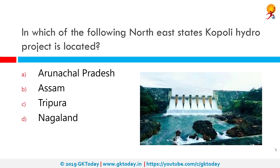In which of the following Northeast states is the Coppoli Hydro Project located? It's located in Assam. The Coppoli Hydro Project is a 275 megawatt hydroelectric power project on the Coppoli River and its tributary, the Umurung stream. It is located in Dima Hasao district of Assam state. The project was developed and is operated by Northeastern Electric Power Corporation Limited.